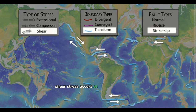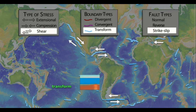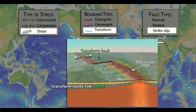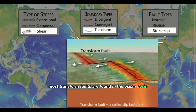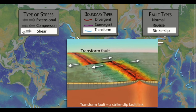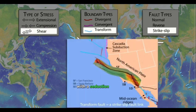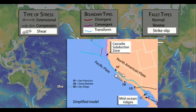Shear stress occurs at transform boundaries where two plates slide horizontally past each other with strike-slip motion. Transform faults link offset boundary segments. Most transform faults are found in the ocean basin where they connect offsets in mid-ocean ridges. Transform faults can also connect a spreading ridge with a subduction zone, such as the San Andreas Fault that separates the Pacific and the North American plates.